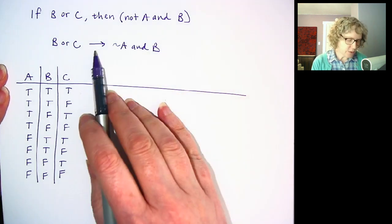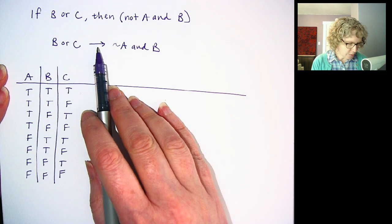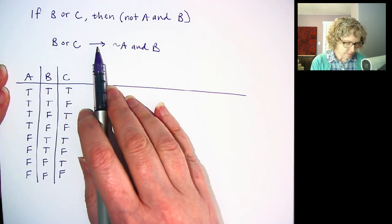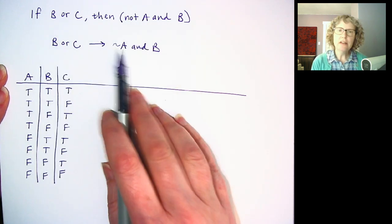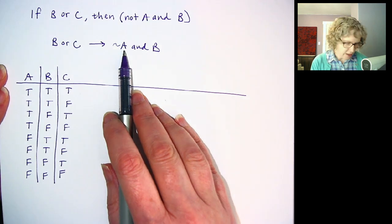It says, if B or C, then not A and B. So there's a lot of different components here. We also, in my open math, have symbols. So I replace the if then with an arrow and the not with the tilde. So you might see it that way also in the online homework system.